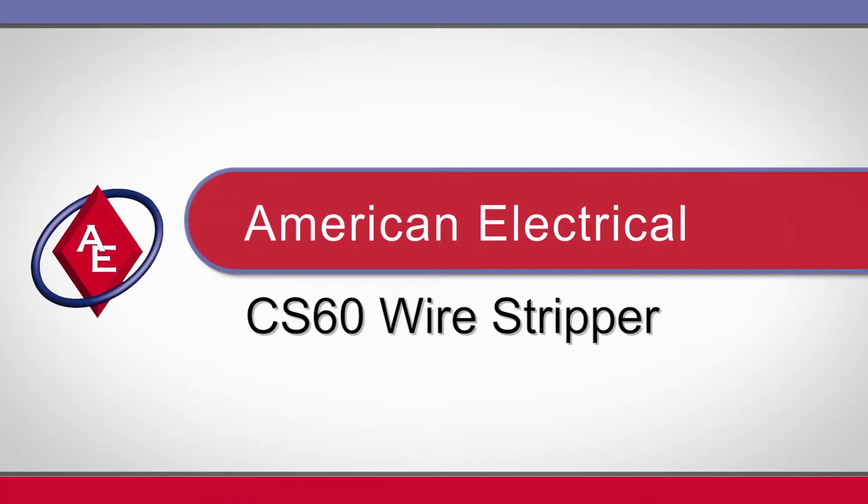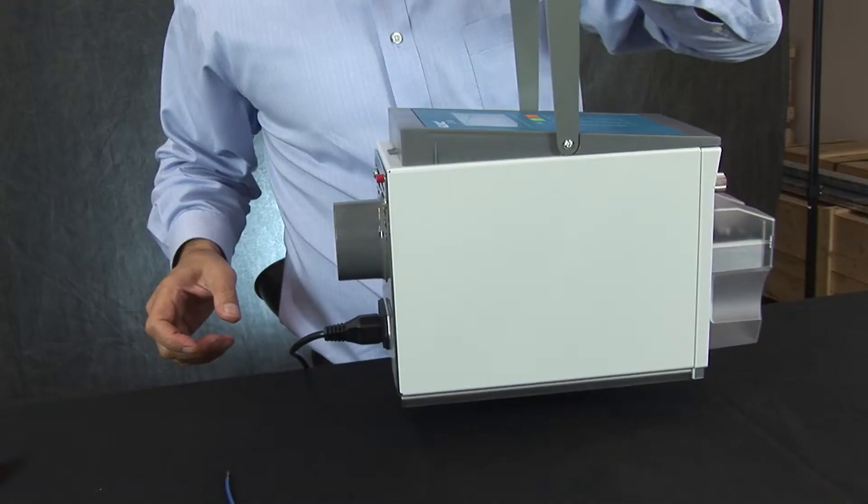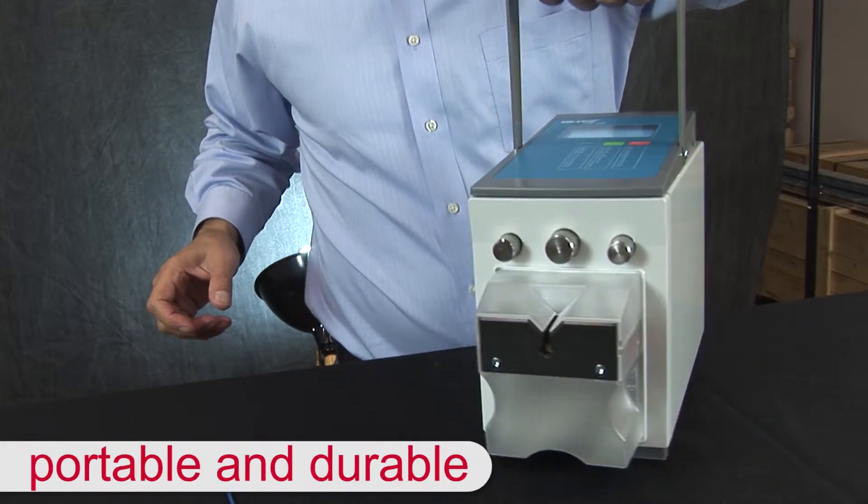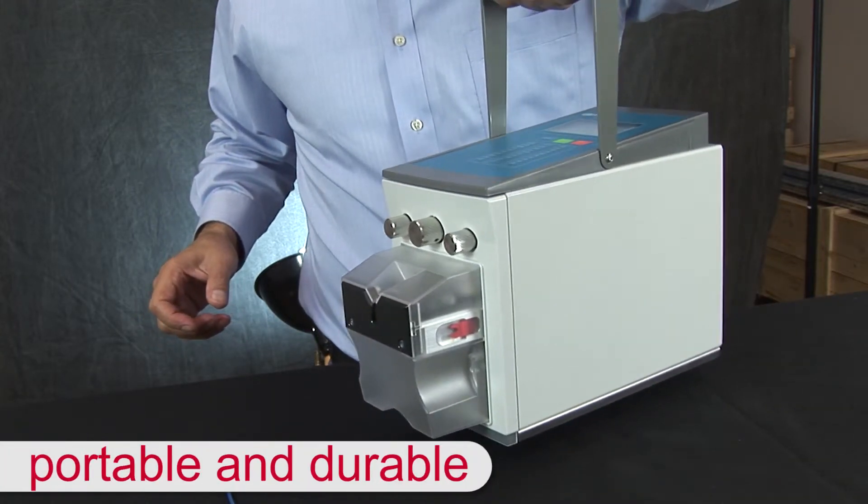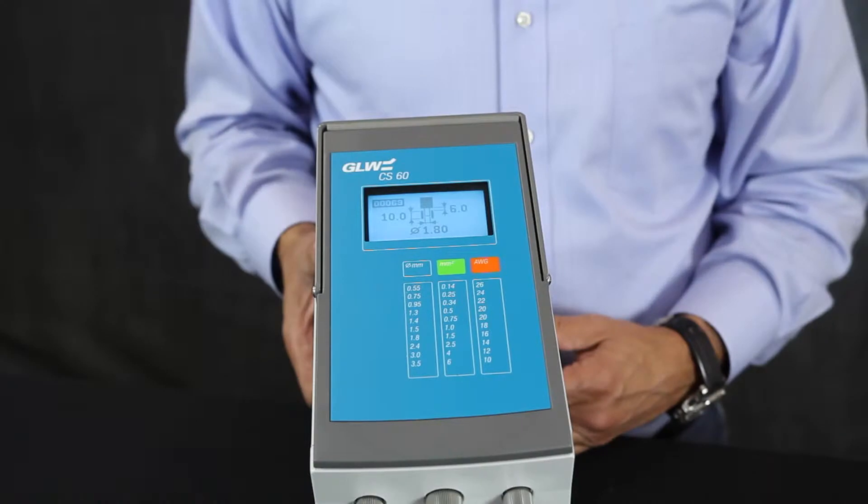Introducing the American Electrical CS60 Wire Stripper. This unit is portable enough to utilize throughout the shop floor and built rugged to withstand aggressive usage.